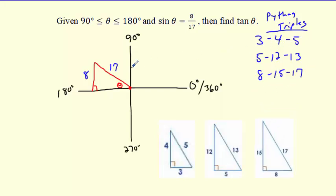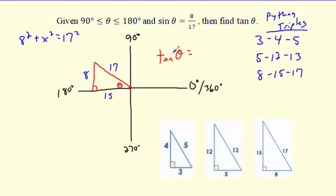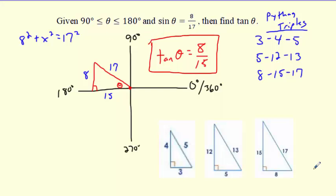Big shortcut: if you recognize that 8 and 17 are part of the 8-15-17 triple, the missing side must be 15. If not, just do 8² + x² = 17² and you'll get 15 anyway. Once you have that, tangent of theta is opposite over adjacent: 8 over 15. That's the ratio of tangent for whatever that angle is. Take your time, practice — these are tricky. Good luck!